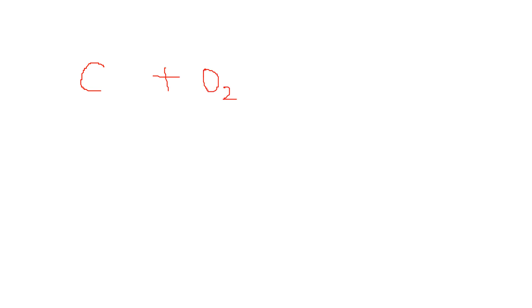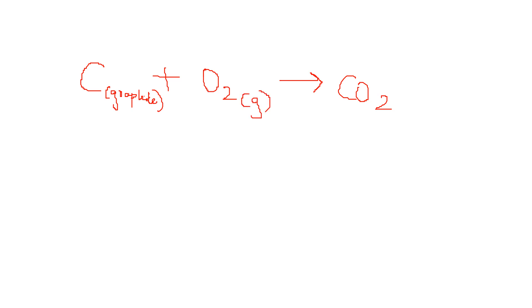Suppose carbon plus O2 gives you carbon dioxide. This reaction is incomplete and wrong as far as thermochemistry is concerned. Because many things we have missed. First is the state — you should write here graphite. Oxygen would be a gas, so in brackets write gas. Carbon dioxide is a gas, so write gas in brackets. Then you have to balance the reaction — C plus O2 giving CO2 is balanced. If the reaction is not balanced you are supposed to balance it.